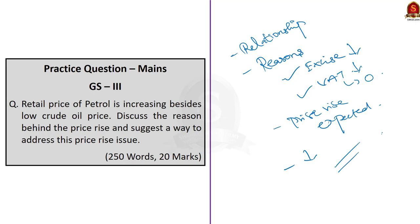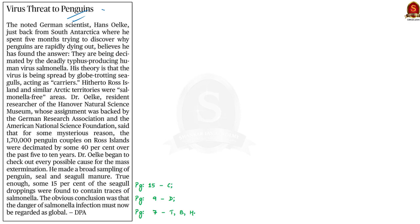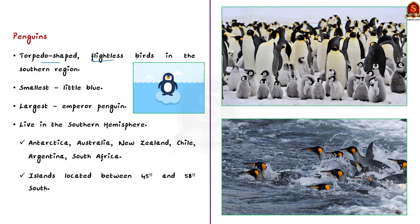The next article is about research by a German scientist in South Antarctica who spent five months trying to discover why penguins are rapidly dying. According to him, penguins are being decimated by the deadly typhus-producing human virus Salmonella, and the virus is being spread by seagulls who act as carriers. In this context, we will learn about penguins, their habitat, and the threats faced by them.